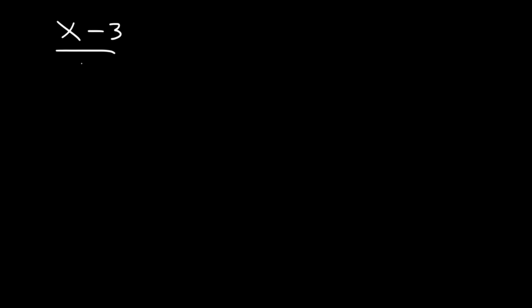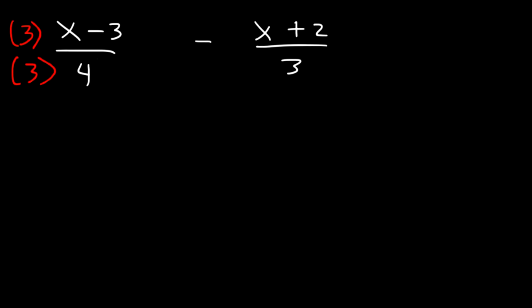Let's try another example: x minus 3 divided by 4 minus x plus 2 divided by 3. We need to get common denominators. The least common multiple of 4 and 3 is 12 — if you're not sure, just multiply 4 and 3. Any multiple of 4 and 3 will work; you may have to simplify later. Let's multiply the first fraction by 3 and the second one by 4.